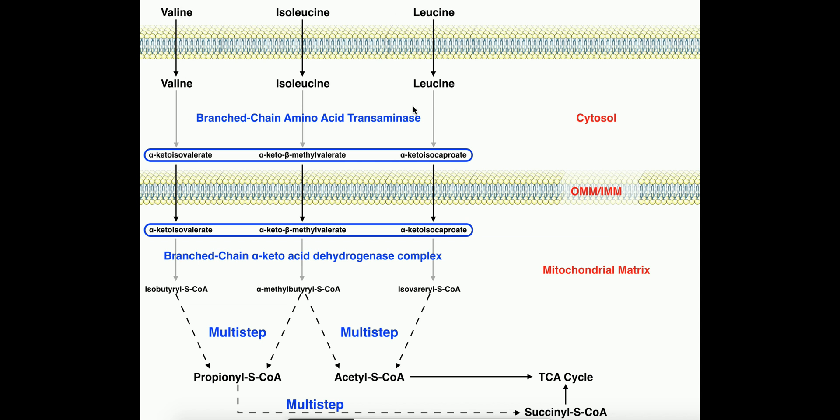Again, I show you the first two steps just because they're the same for all three of these amino acids, and they're the most clinically notable. But ultimately, they're either degraded to propionyl-CoA, acetyl-CoA, or both, both of which either directly or indirectly enter the TCA cycle.